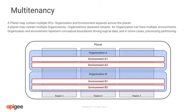Putting it all together, a planet can be visualized as follows. On the diagram, we illustrate an Apigee planet with three regions. The planet contains two organizations, A and B. Each organization contains two environments, A1 and A2, and B1 and B2, respectively. Notice that organizations and environments expand across the planet in all regions. This is an important concept.